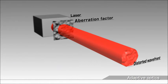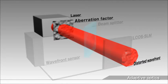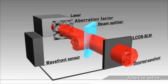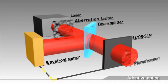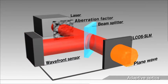Distortion in the light wavefront due to various factors will cause poor optical system performance. However, a nearly ideal optical system can be achieved by measuring the wavefront shape with a wavefront sensor and applying adaptive optics technology to correct deviations from the plane waves by feedback.